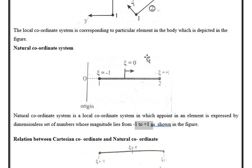Since this is a 1D element, zeta is the only coordinate assigned. If it is 2D, zeta and eta are used; if it is 3D, one more term such as pi can be used. So there are three types of coordinate system in FEA: global, in which the entire geometry is represented; local, in which each element is assigned with coordinates; and natural, in which a particular node is assigned with coordinates.